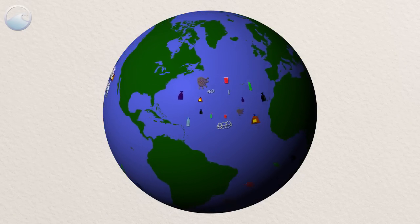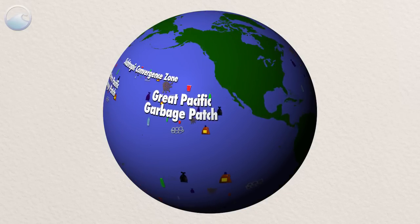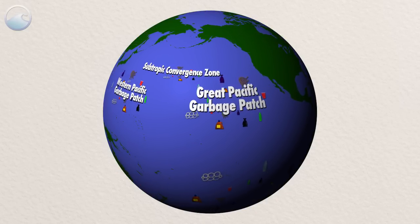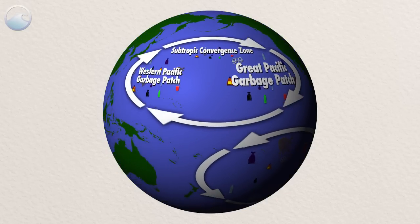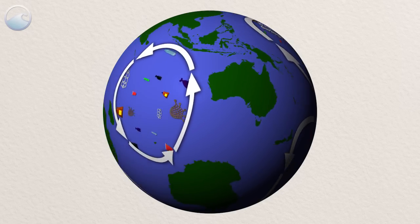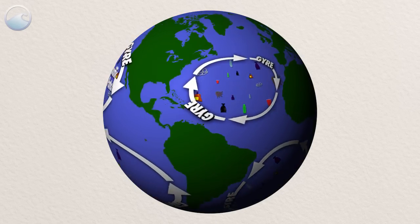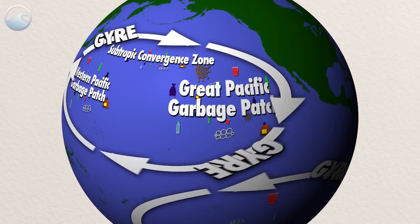They exist all throughout the ocean, and the Pacific Garbage Patch just happens to be the most famous. Garbage patches are large areas of marine debris concentration that are formed by rotating ocean currents called gyres, kind of like big whirlpools that suck things in.